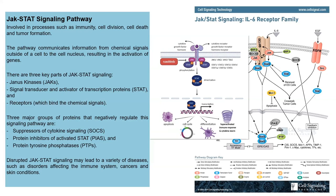The JAK-STAT pathway is involved in immunity, cell division, cell death, and tumor formation. The pathway communicates information from chemical signals outside the cell to the nucleus and results in activation of some genes. There are three parts to the JAK-STAT signaling pathway: the Janus kinase, the signal transducer and activator of transcription protein, and the receptors to which chemical signals like growth factors and cytokines bind. We have three major proteins that negatively regulate this signaling pathway: the suppressors of cytokine signaling, the protein inhibitors of activated STAT, and a protein tyrosine phosphatase.